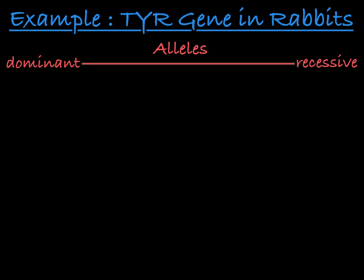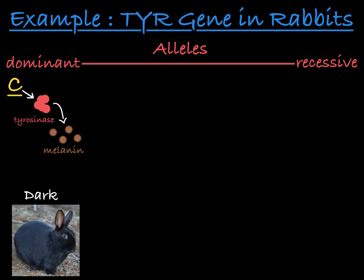The most dominant allele, called big C, encodes a fully functioning version of the enzyme tyrosinase, which is involved in the production of the pigment melanin. Melanin gives the rabbit dark fur color, making it brown or black all over. Any rabbit with at least one big C allele will have this dark fur color all over its body.